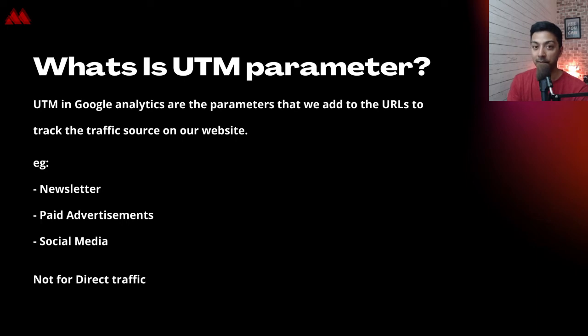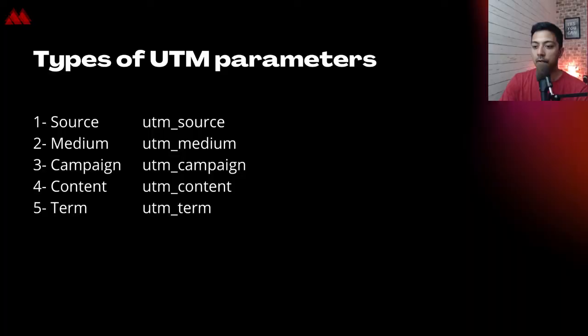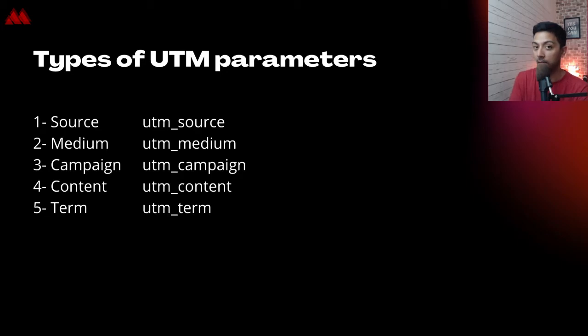In UTM we have five parameters: source, medium, campaign, content, and term. All five parameters are denoted by a prefix 'utm_' followed by the term — so it will be utm_source, utm_medium, utm_campaign, utm_content, or utm_term. With all these parameters in our URL, we will be able to track where the website visitor is coming from. Let's see how it looks in a practical scenario.